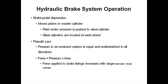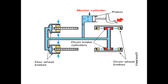Force applied to brake linings increases with a larger diameter wheel cylinder. When we apply pressure on the brake pedal, a lever connected to the piston via different joints causes the piston to move. There is brake fluid present in the system.